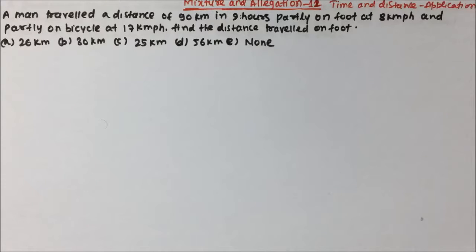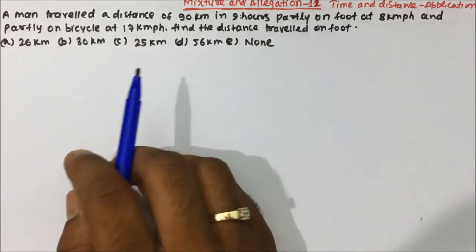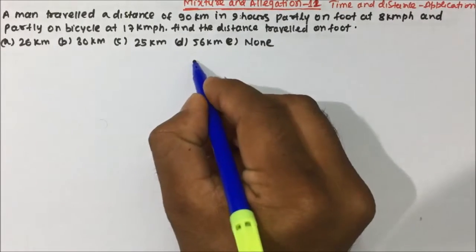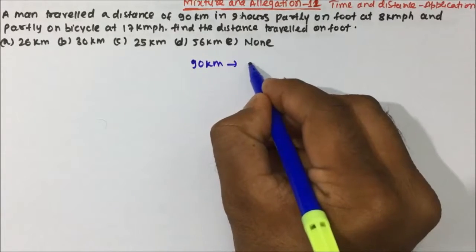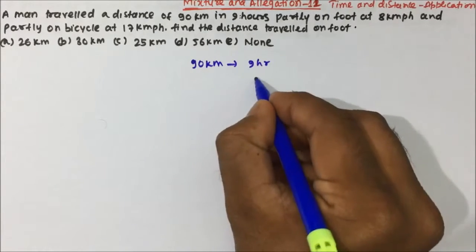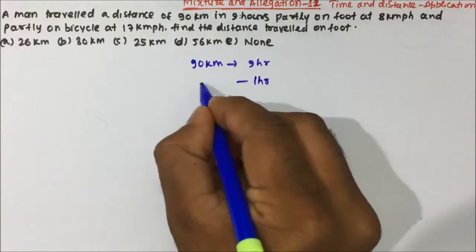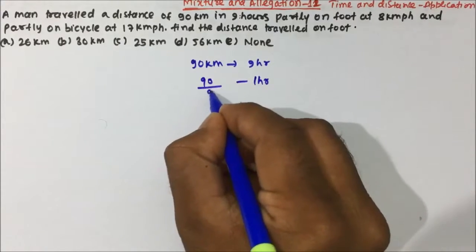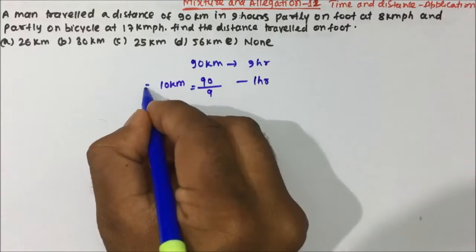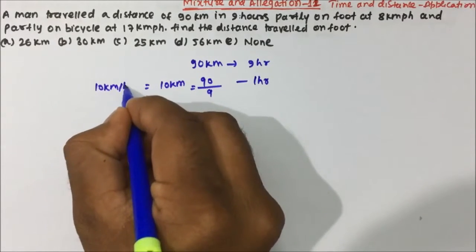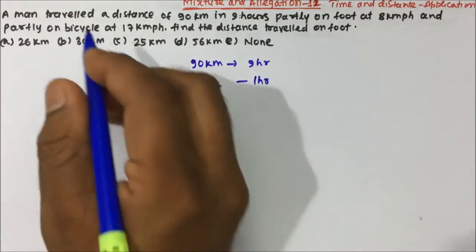Today's question is very important because we are going to learn the application of Allegation in Time and Distance. A man travelled a distance of 90 kilometers in 9 hours. So in one hour, how much distance will he cover? 90 divided by 9 is 10 kilometers. So the speed of the man is 10 kilometers per hour.